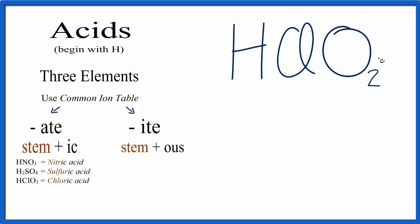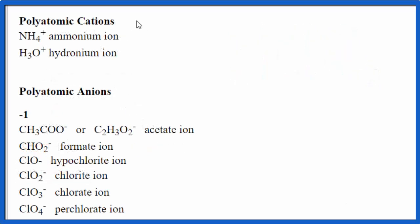and we need to know the name for that. So we're going to look this ion up on the common ion table. We look down the table, we're looking for ClO2 minus, and here we have it, ClO2 minus. It's the chlorite ion.